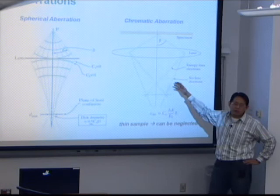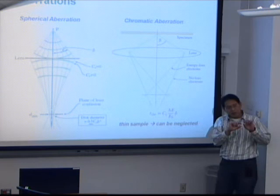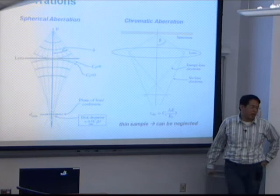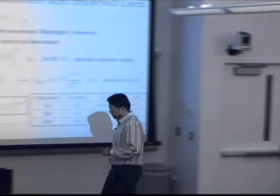There is also chromatic aberration: if you have different wavelengths of light, or in this case different energies of electrons, you get different refraction from the lenses. However, because we are talking about very thin samples — about 100 nanometers — in TEM this is not a major effect. The major effect reducing resolution is spherical aberration.